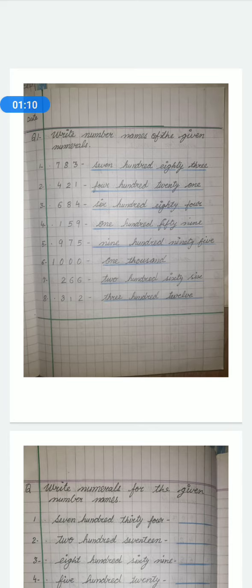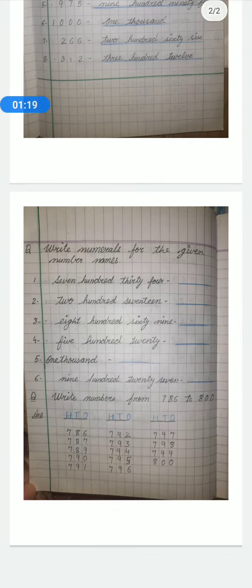Now today I am giving you a small exercise to do in copy that is to write number names of the given numerals where the solution is already done in front of you. In the second exercise you have to write the numerals in front of the number names and the third exercise is to write 786 to 800 which is already done for you. So one exercise you have to do, the other two we have already done for you.